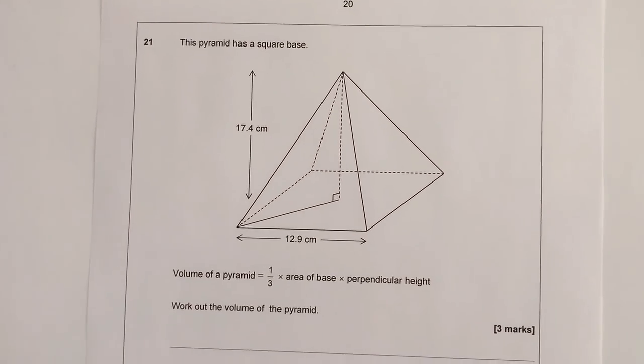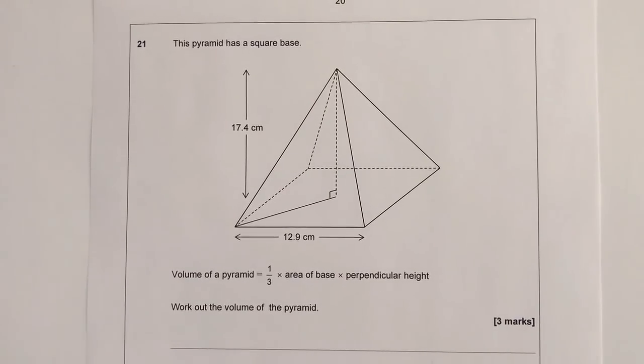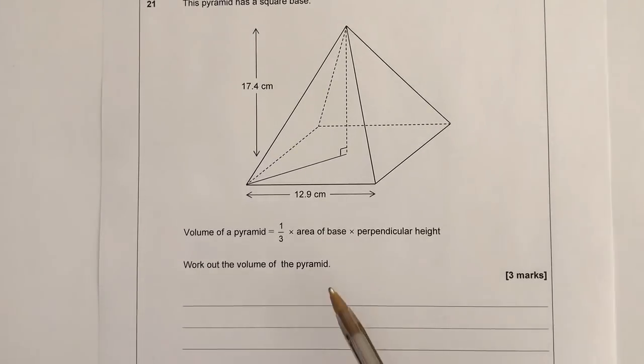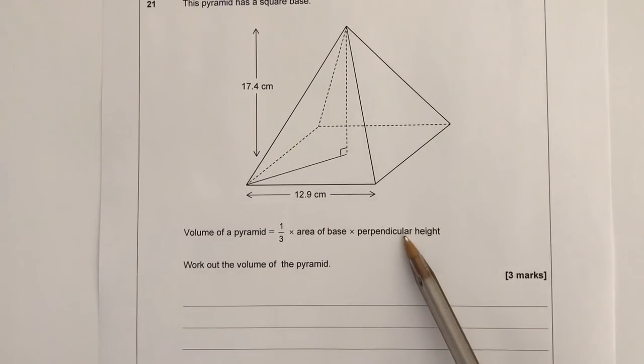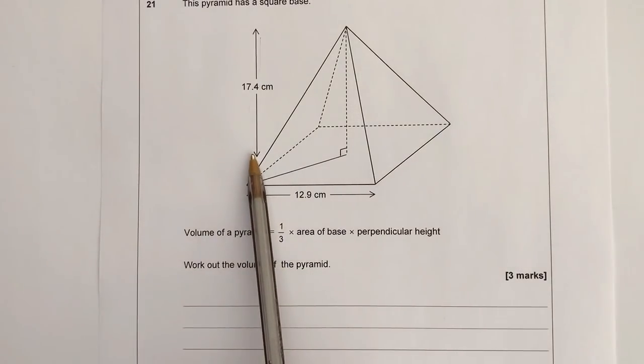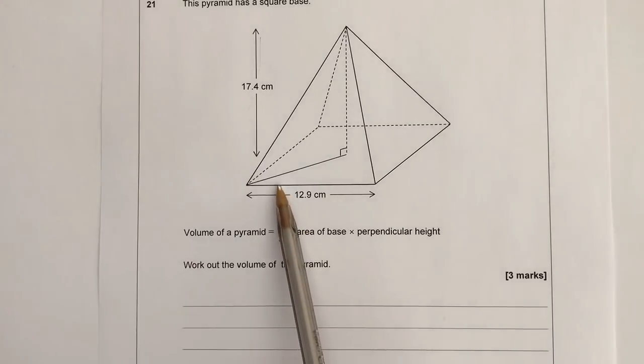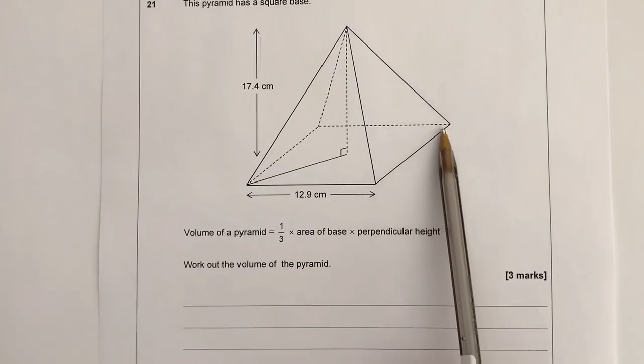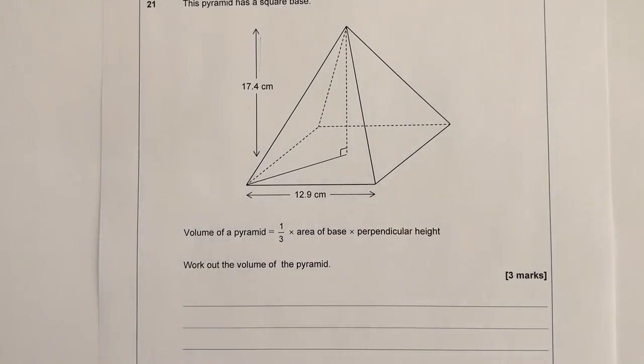Question number 21 deals with something called a square-based pyramid and it actually gives you the formula that you need to use to work out the volume. Well, the first thing is if we work out the volume, we need to know the area of the base and the perpendicular height. The perpendicular height we've been given, which is 17.4, and the area of the base is going to be 12.9 along here. Now because it's square, we're going to multiply it also by 12.9.